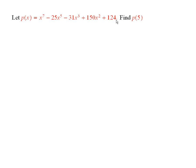Now, obviously one way to do it would be to just place a 5 wherever you see an x and then multiply it out. But that would require you to take 5 and raise it to the 7th power, and then you'd be subtracting off 25 times 5 to the 5th power, and 31 times 5 to the 3rd power, and so forth. So these would be very big numbers that you'd have to work with. Nevertheless, you could do it that way.